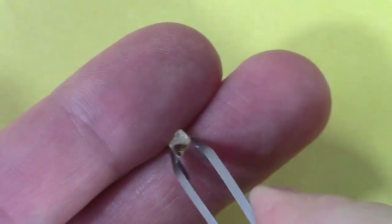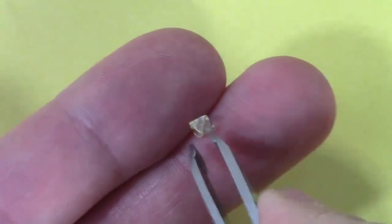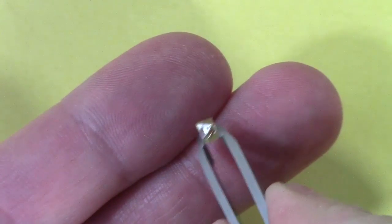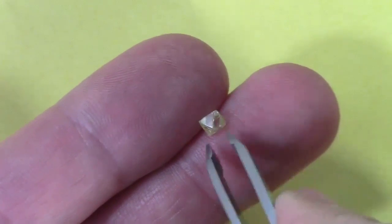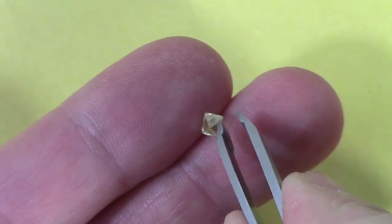Some people like cut diamonds, which are ground down to have many reflective facets. I prefer this natural octahedron diamond crystal because when I look at it, I can visualize how its carbon atoms are arranged.